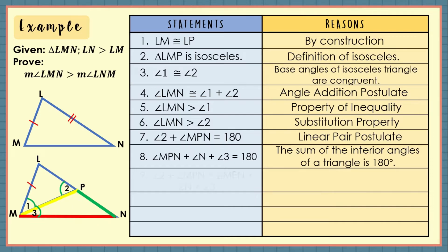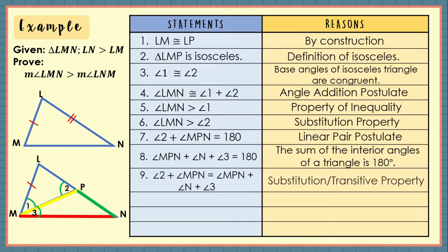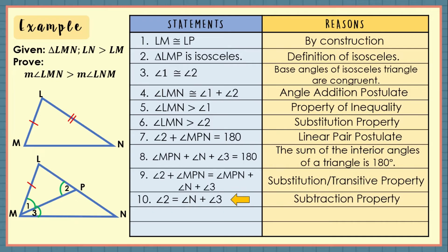For our next statement, based on statements 7 and 8, replace the right side of equation 7 with its equivalent in statement 8. Thus, angle 2 plus angle MPN is equal to angle MPN plus angle N plus angle 3 — by substitution or transitive property. Next, subtracting angle MPN from both sides gives angle 2 is equal to angle N plus angle 3 — by subtraction property. Then, based on the previous statement, angle 2 is greater than angle N because of the property of inequality.